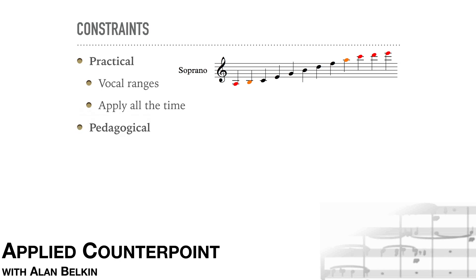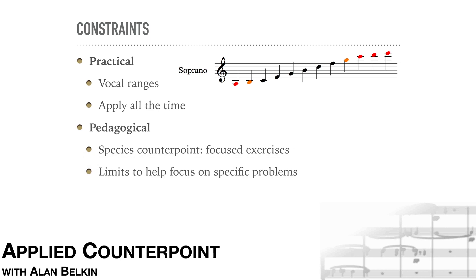The second kind is pedagogical. In the same way that a physical trainer works on specific muscles with focused exercises, species counterpoint allows us to concentrate on one thing at a time. The first four species all have severe limits on rhythm and dissonance treatment, not because that's the way real-life music works, but simply to allow us to focus on specific problems. To ask a beginner to write beautiful, easily singable lines which combine well with other lines and which exhibit excellent control of harmonic tension and rhythmic momentum is just not realistic. So species counterpoint allows us to work on each of these things individually.